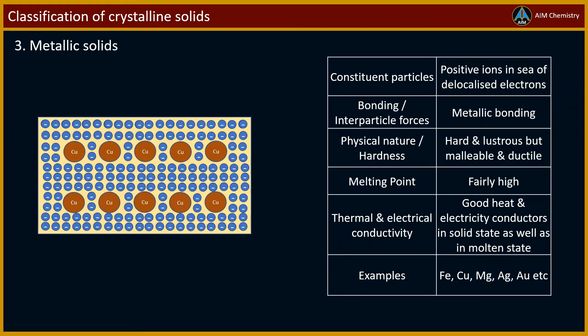Third type of crystalline solids is metallic solids. As shown in figure, constituent particles in metallic solids are positive ions present in sea of delocalized electrons.